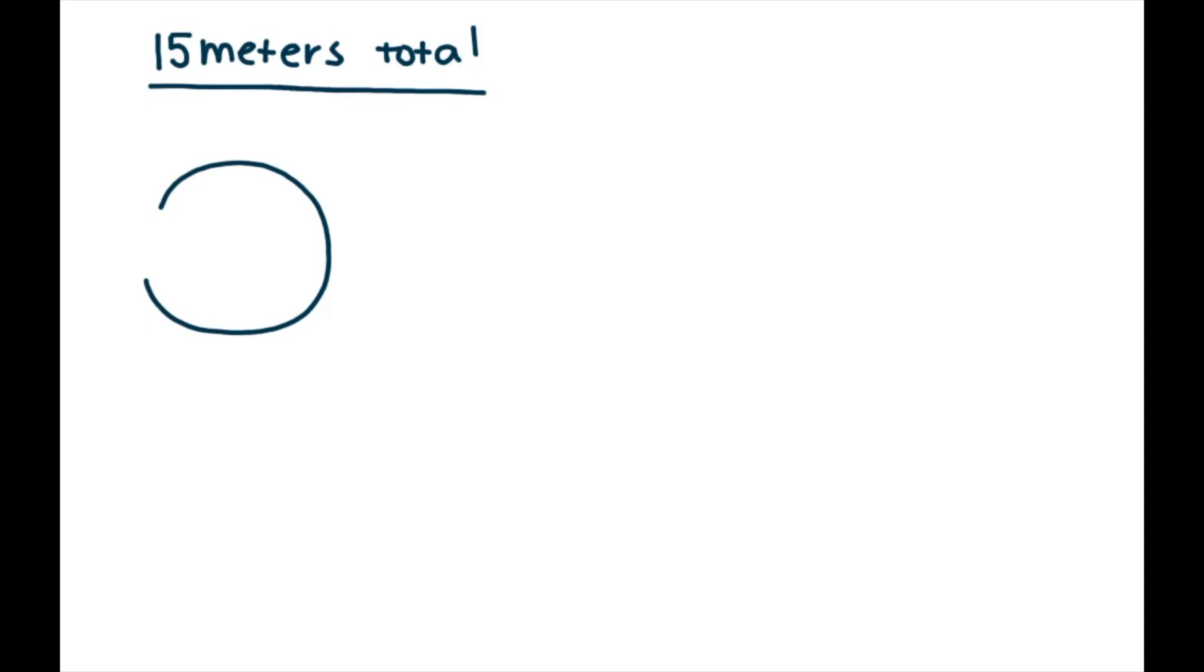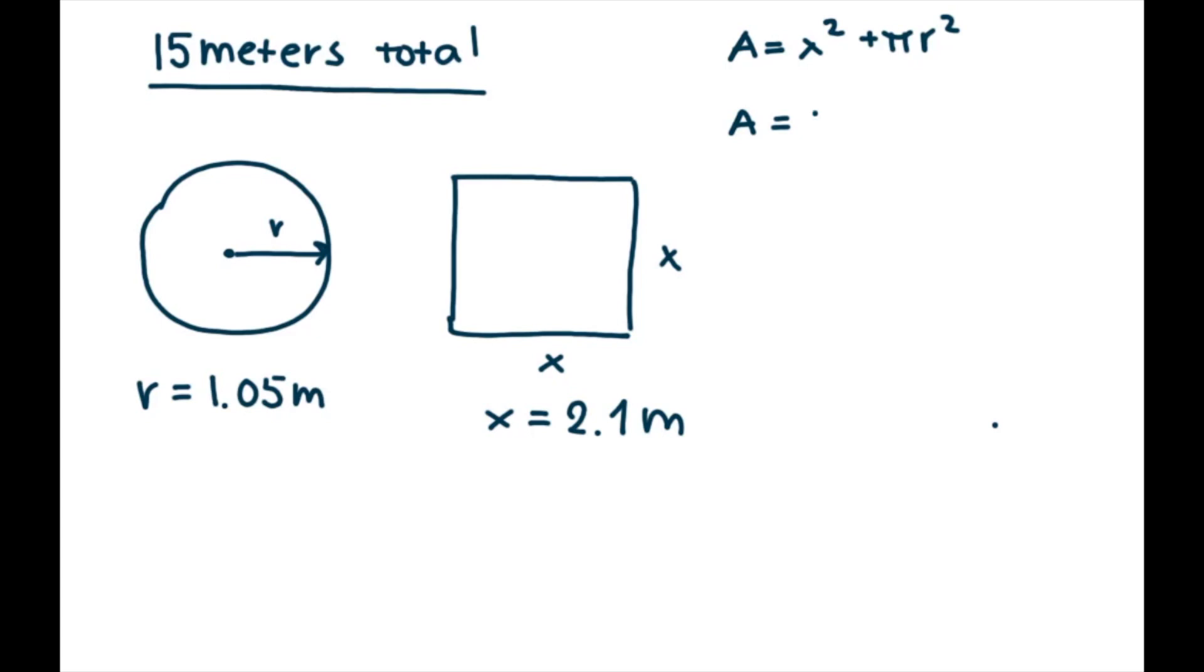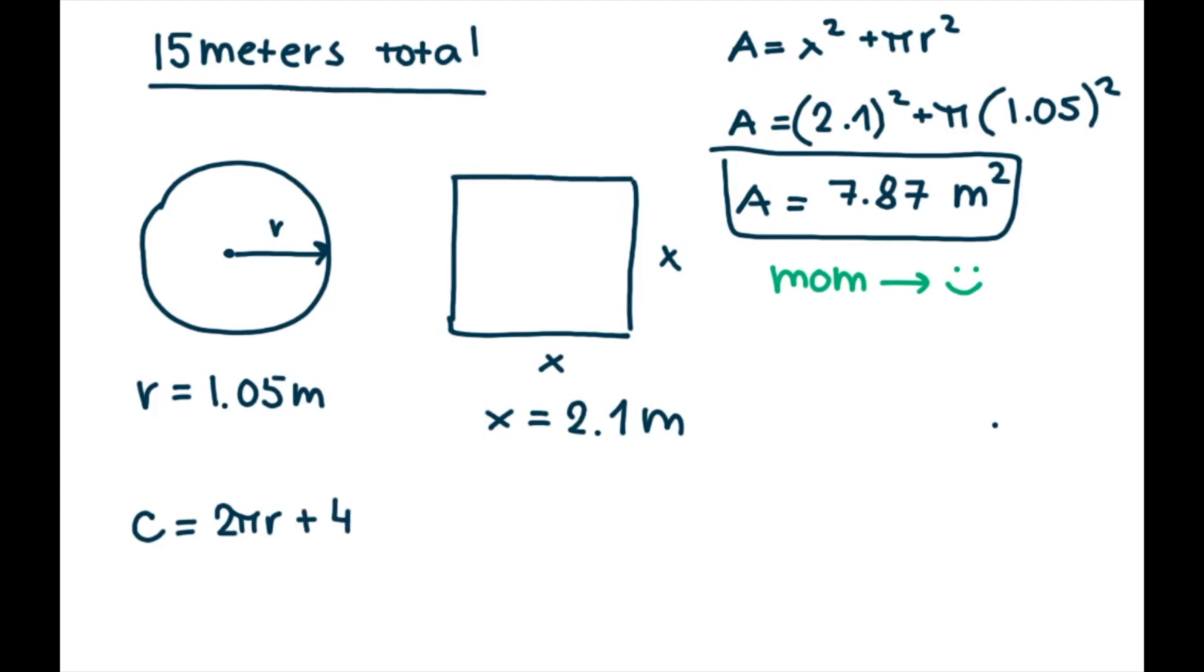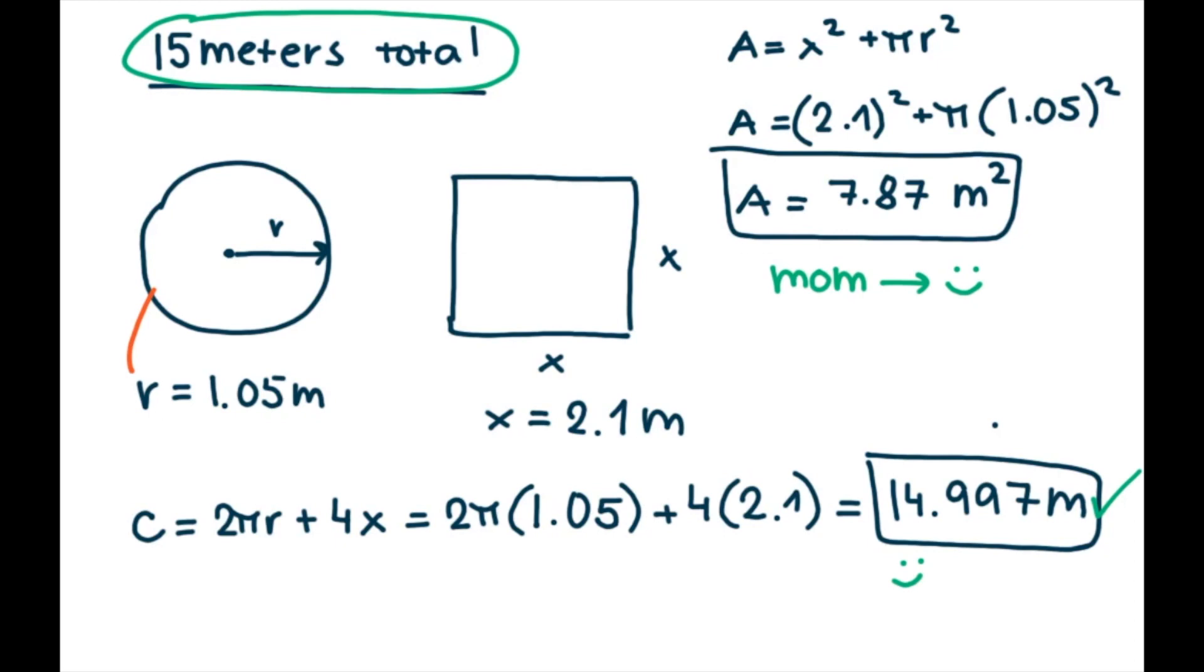So here is just a quick recap of what we found. Our circle and square. We found that radius will be 1.05 meters and one side of the square will be 2.1 meters. So here we show our mom that it will actually not be a big area, it will be really small. It is the smallest area, so mom will be happy. And now we need to confirm that we will use 15 or less than 15 meters. So that works. Perfect.